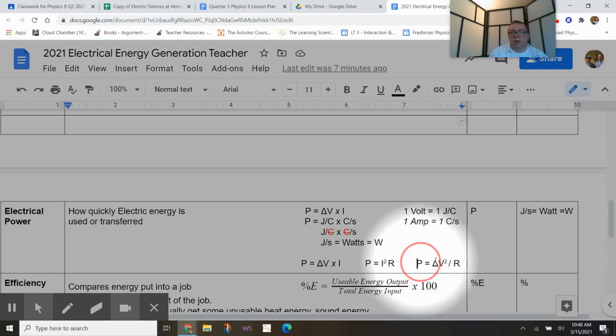And lastly, I guess maybe not lastly, there are probably some other ways we could go through and substitute, but for us, this is probably the last one. Electrical power could be the potential difference squared divided by the resistance. Power and joules per second or Watts.